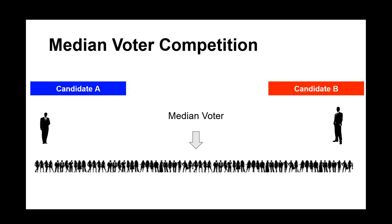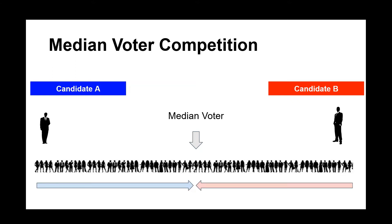Here's how it works. In two-party competition, both candidates will try and compete for the middle or median voter. By definition, the winning candidate will be the one that can break the 50% barrier. We call that the median voter.